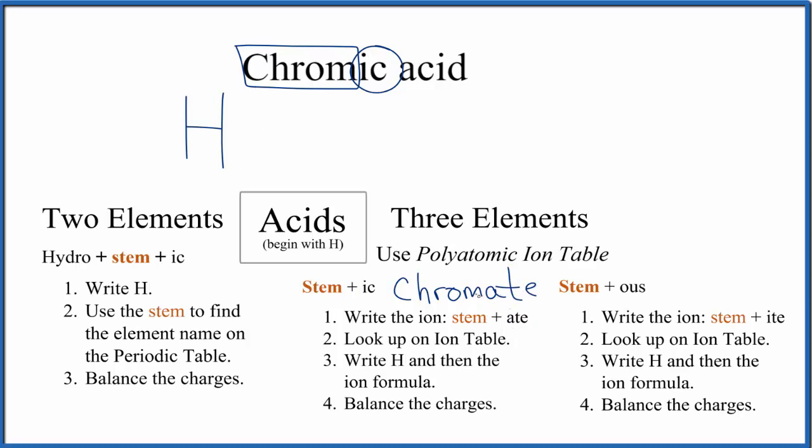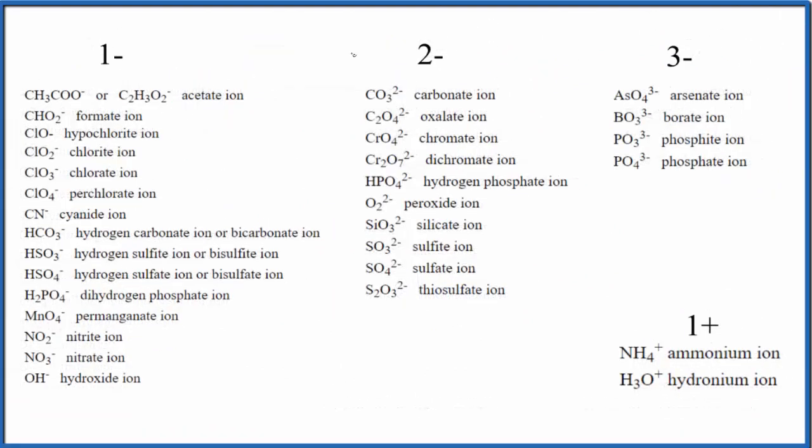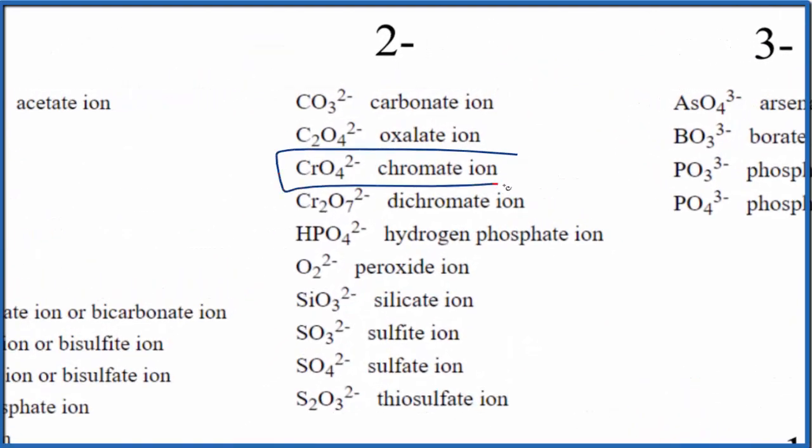We have the chromate ion. We can go to a list of polyatomic ions, look at a polyatomic ion table, and we can figure out the formula for the chromate ion. Here's our list. As I look down the list, right here, chromate ion: CrO4 2-.